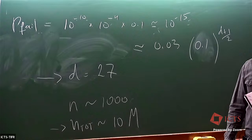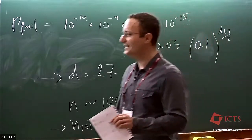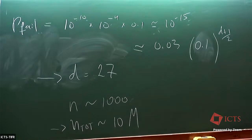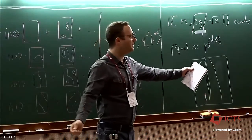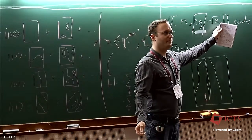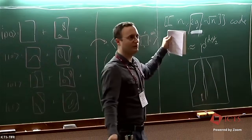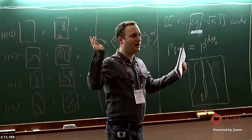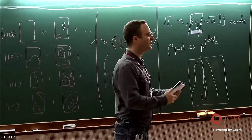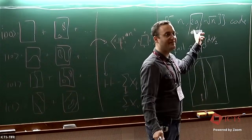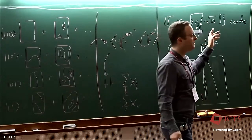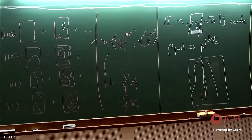We want something better than 10 million qubits. The root of the overhead problem is that as we make bigger and bigger surface codes, the distance gets better but we still have a constant number of logical qubits per surface code. In classical error correction, good codes have distance and number of encoded bits that both grow with the code size. If we could achieve this in the quantum case, we could reduce the overhead by an order of magnitude or more. This is what we're going to discuss next.